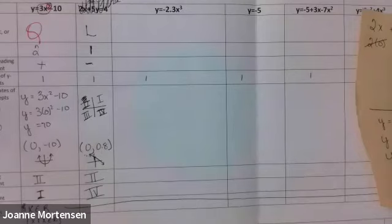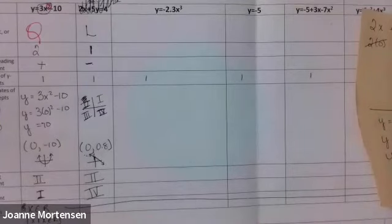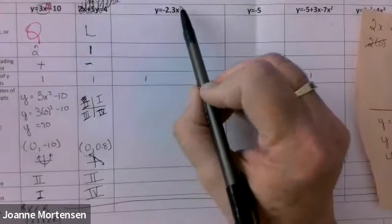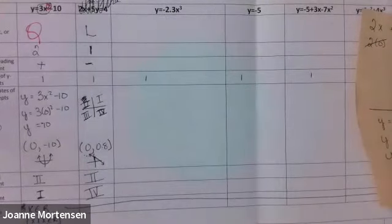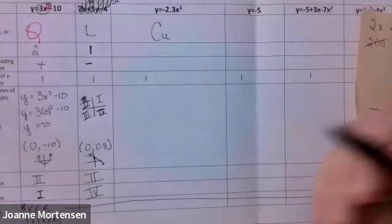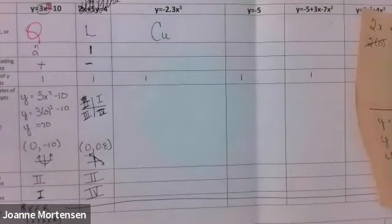I'll do two more together and then give you some time because the other ones are just variations of what we've done. Tyrese, this next one: y equals negative 2.3x to the third — constant, linear, quadratic, or cubic? Cubic. And use 'CU' not just 'C' because you've got constant and cubic both starting with C.